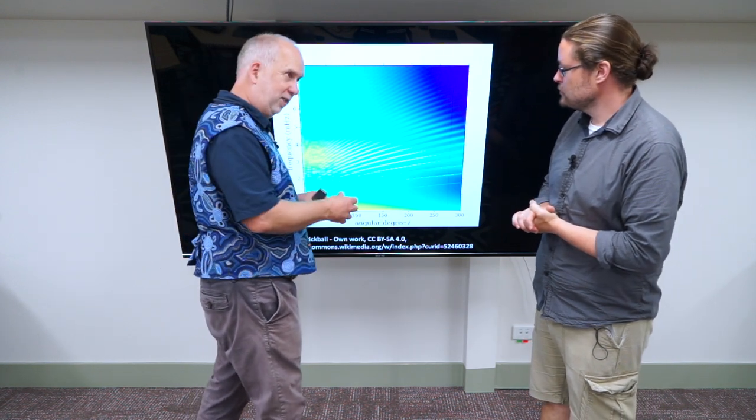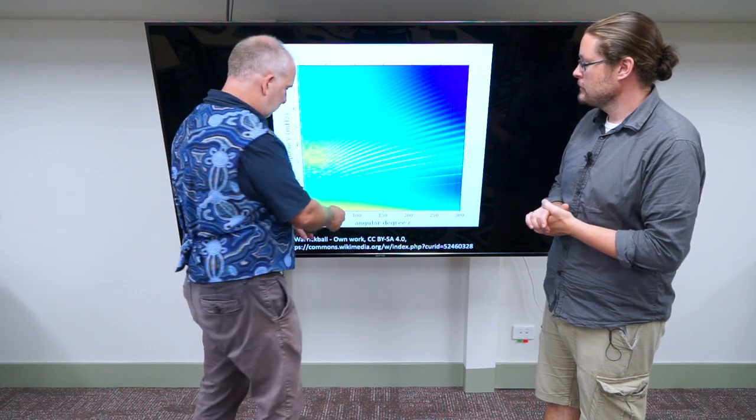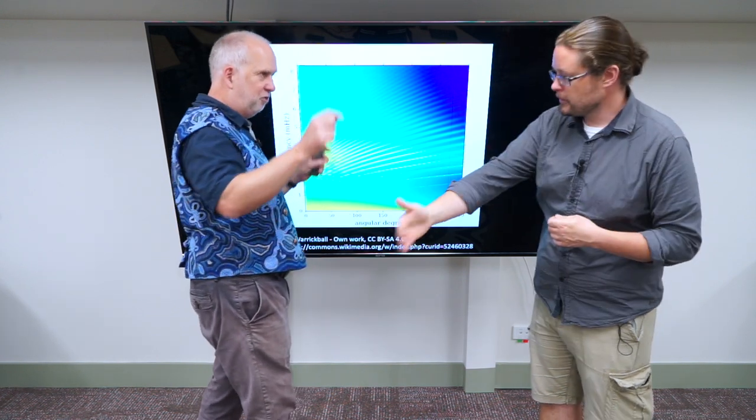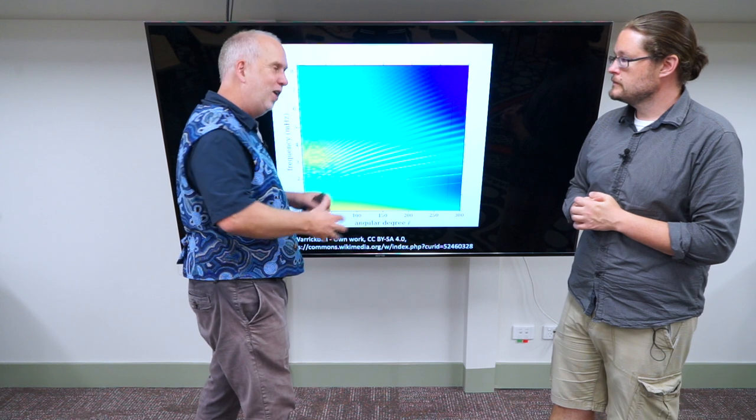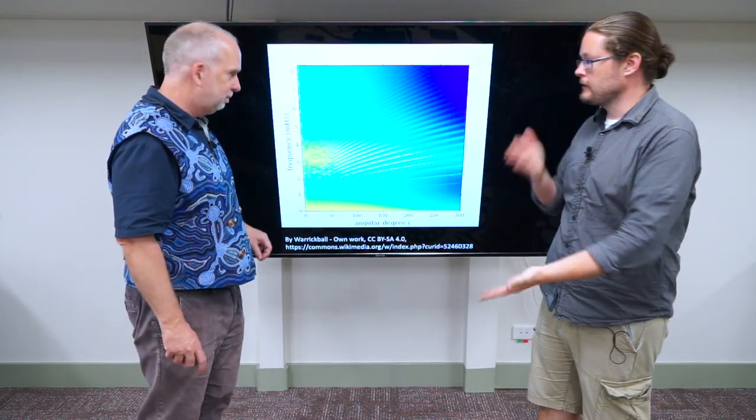So those would be short wavelengths. And the short wavelength ones will penetrate to any more shallow depths in the Sun, whereas the longer wavelength ones, that might only be 50 or 100 across the surface of the Sun, are penetrating deeper. So you can look at the different degrees to figure out the different depths.